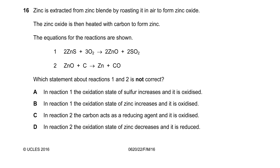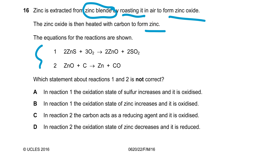In question 16, zinc is extracted from zinc blende, which is an ore of zinc and sulfur. By roasting — a combustion reaction in air — zinc oxide is formed. The zinc oxide is then heated with carbon to form zinc metal. Zinc sulfide is oxidized to zinc oxide and sulfur dioxide, and then zinc oxide is reduced by carbon to form zinc metal and carbon monoxide.